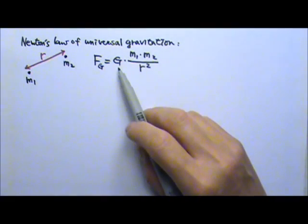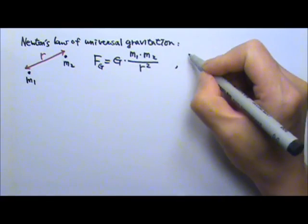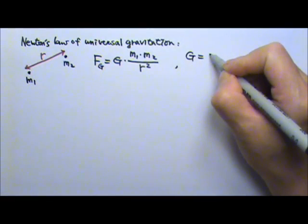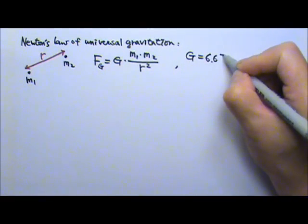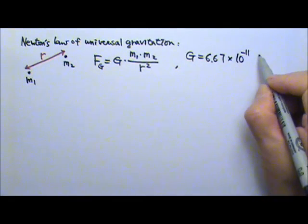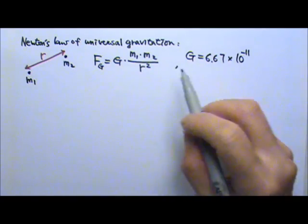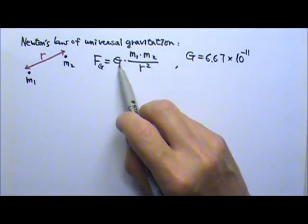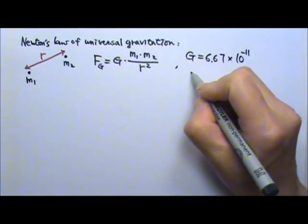Which means the big G is a very, very small number. It turns out the big G is so small it is 6.67 times 10 to the negative 11th. Now let's see, in standard unit, if we want this unit of G, we can solve for G in that equation.